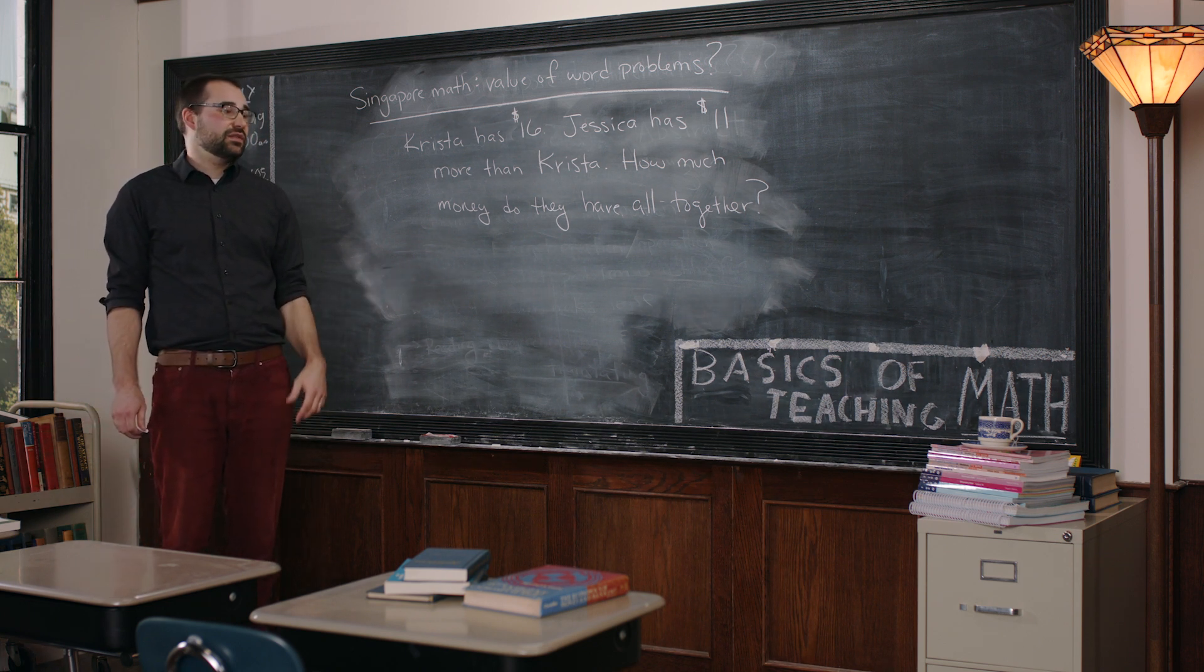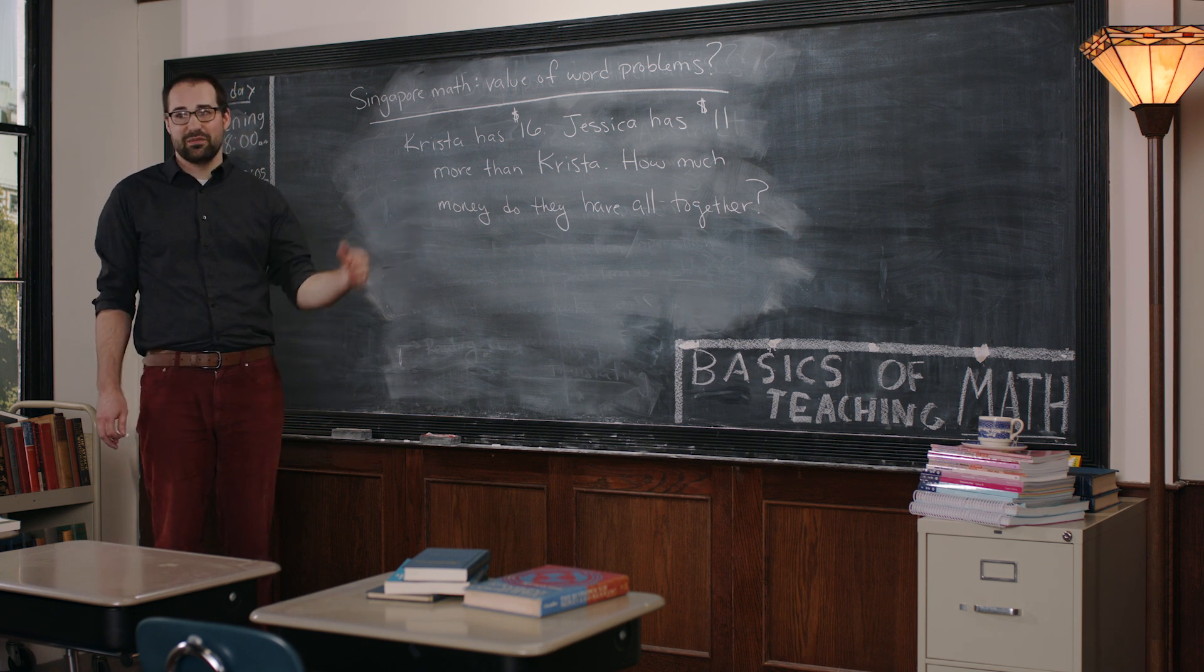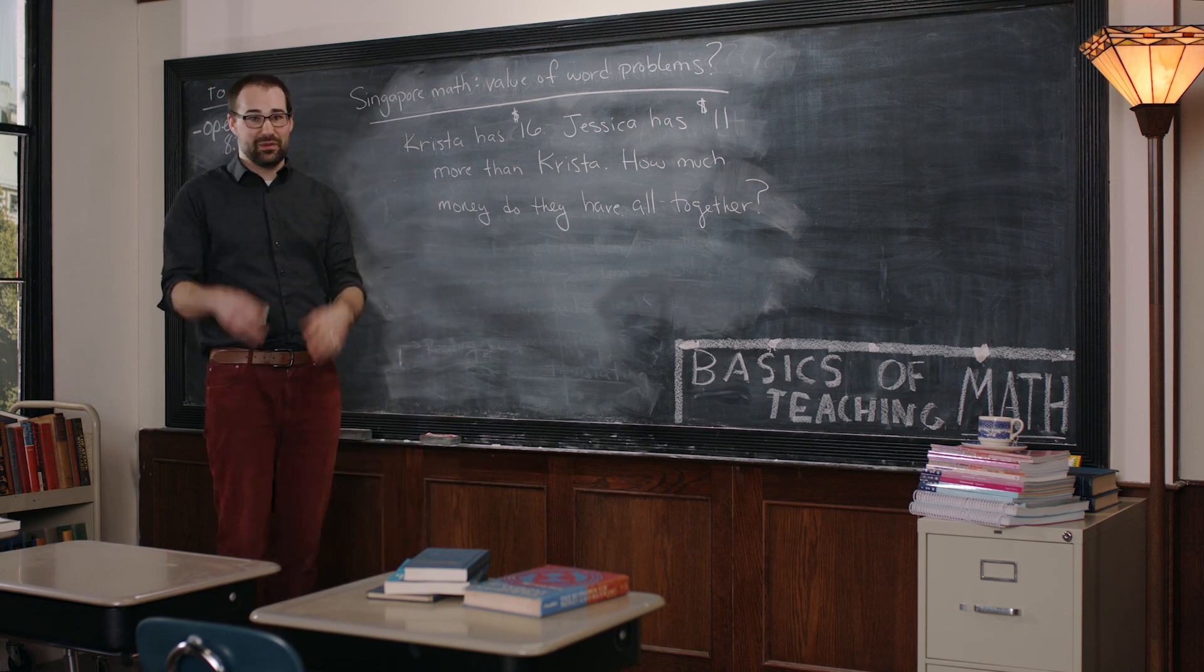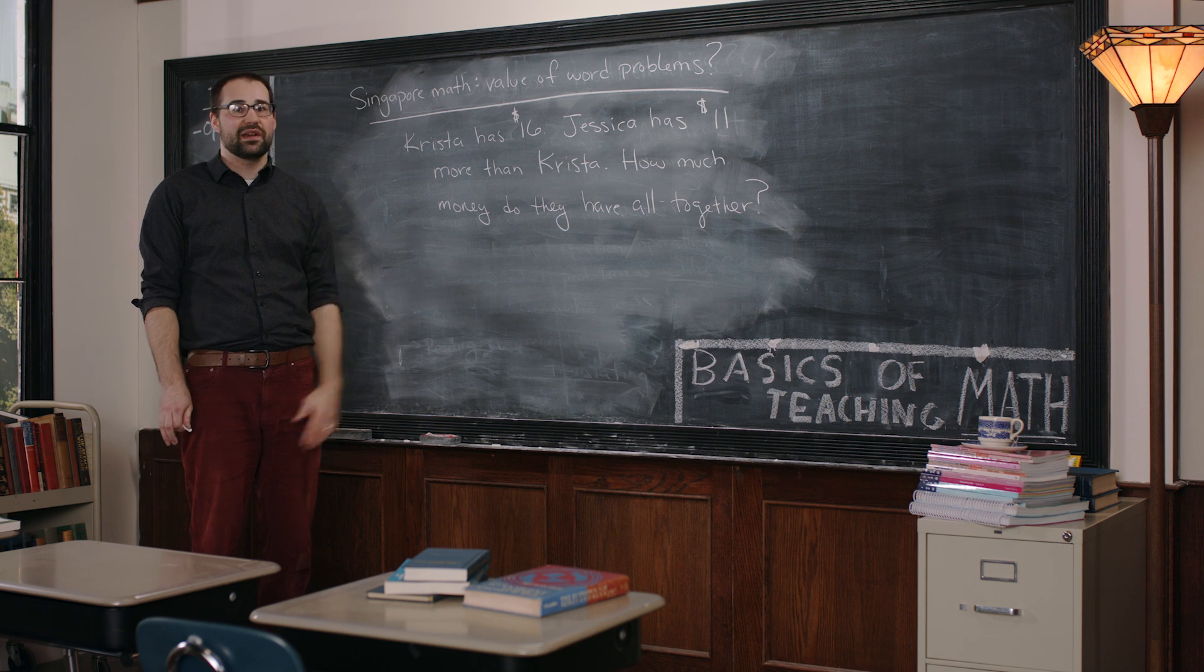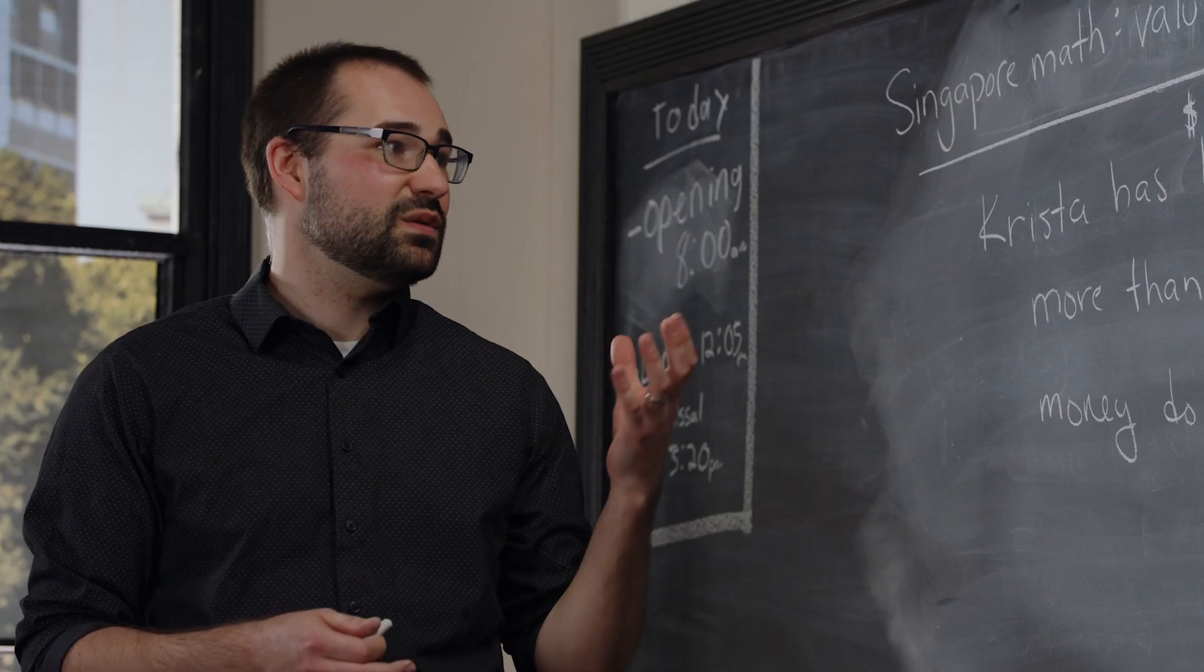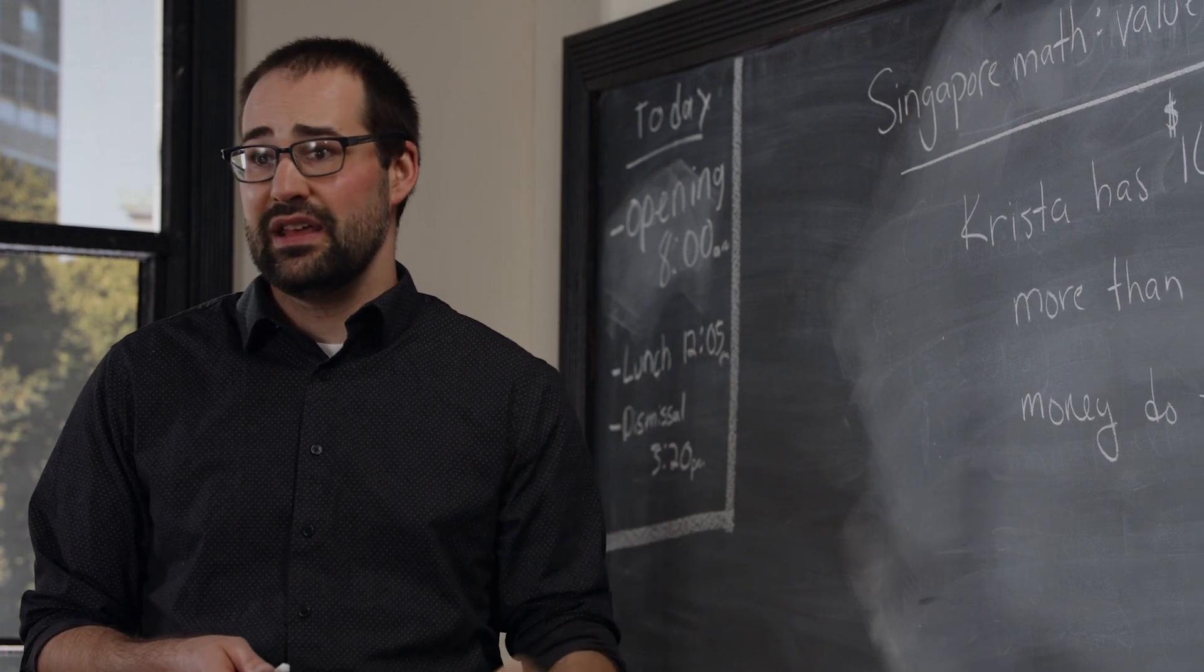A lot of second, third graders, maybe even some of you, would try to solve this by saying I see the number 16, I see the number 11, I see the word altogether. Let's put $16 and $11 together, we get $27, let's call it a day. And really it's not the right answer to this problem here.